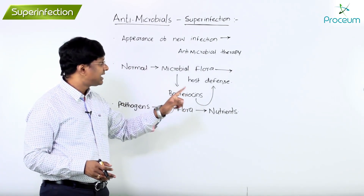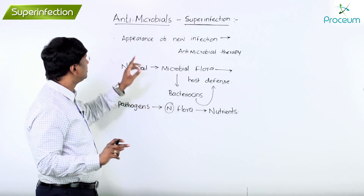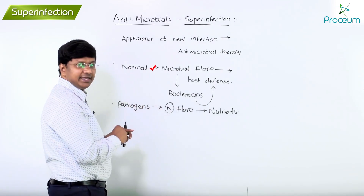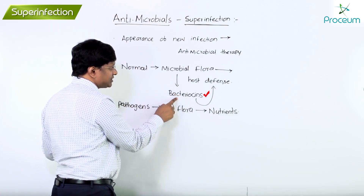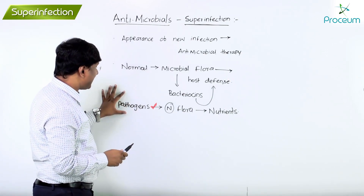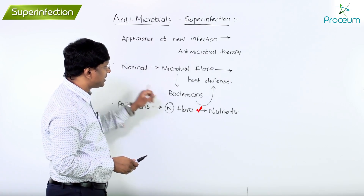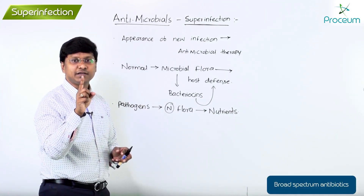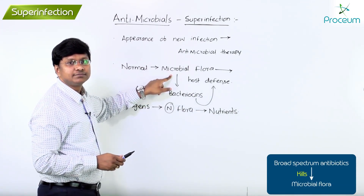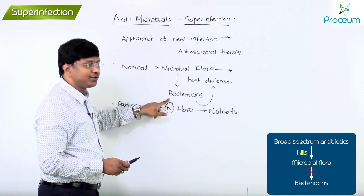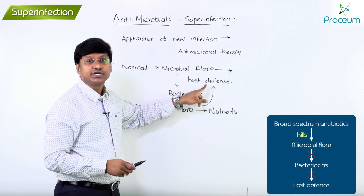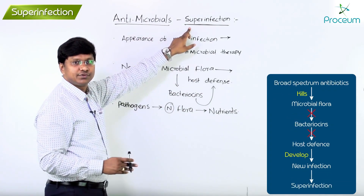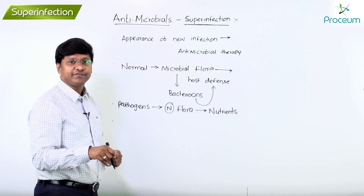Superinfection is the appearance of a new infection as a result of antimicrobial therapy. Normally the microbial flora develops bacteriocins responsible for host defense. Even pathogens compete with normal microbial flora for nutrients. If you give certain broad-spectrum antibiotics, these will kill the microbial flora. Once the microbial flora is killed, bacteriocins will not be produced, so there is no host defense, and thereby there is development of a new infection called superinfection.